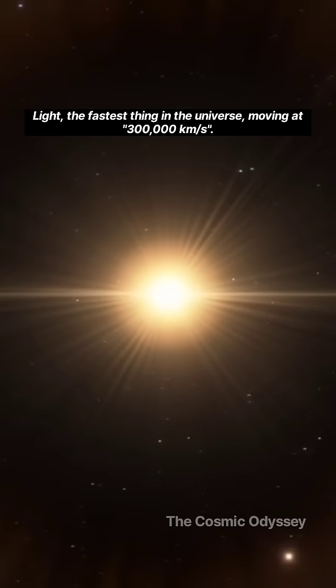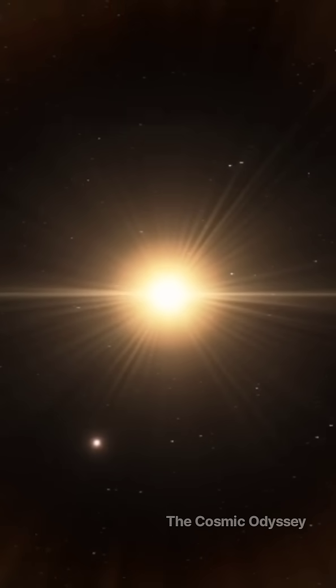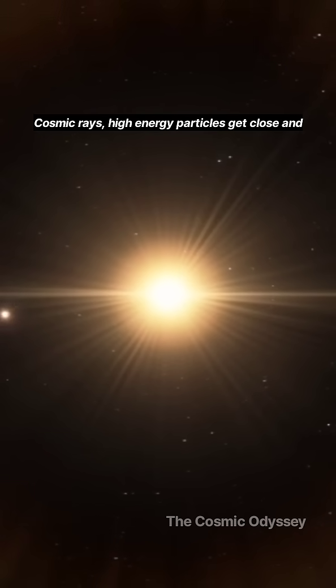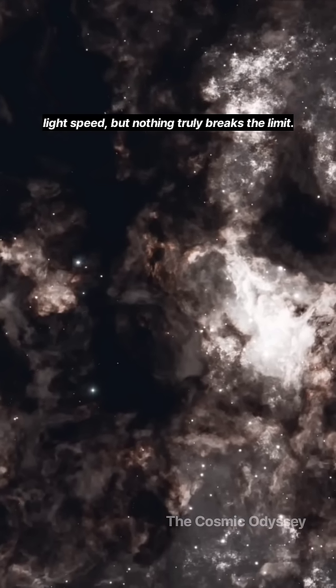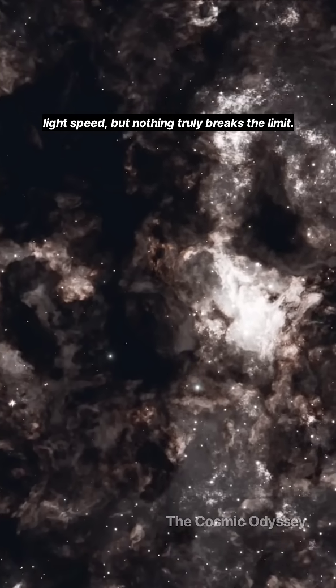Light, the fastest thing in the universe, moving at 300,000 kilometers per second. Nothing with mass can outrun it. Cosmic rays, high-energy particles get close, and blazar jets from black holes almost reach light speed. But nothing truly breaks the limit.